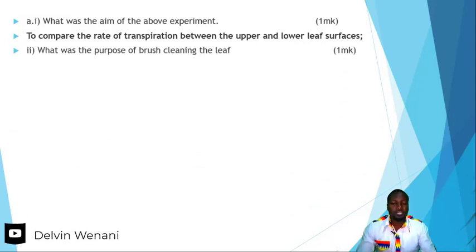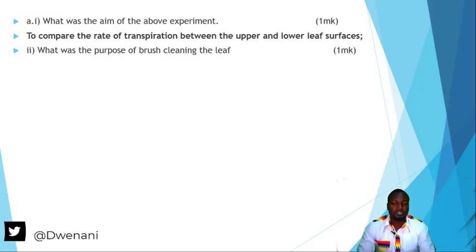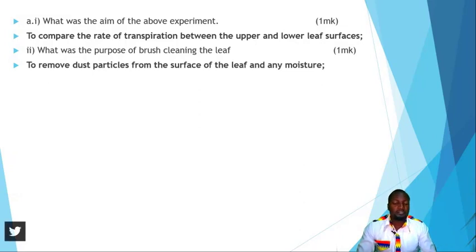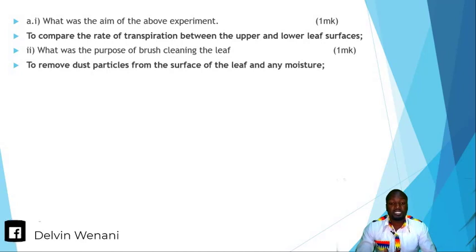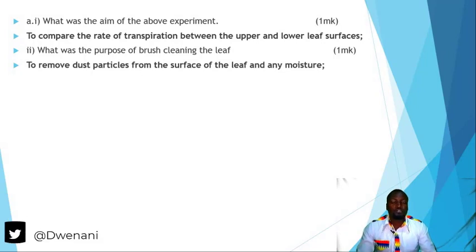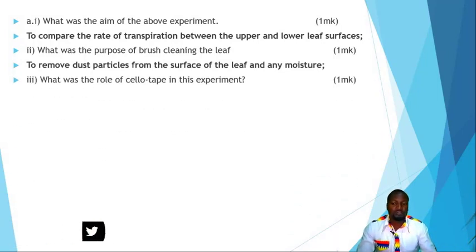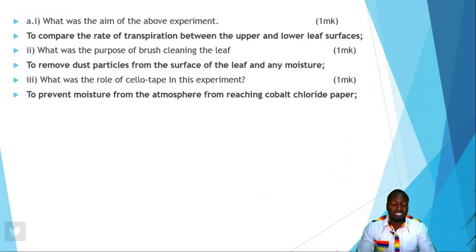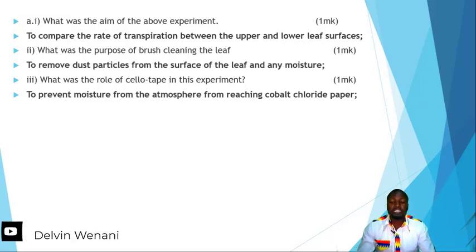What was the purpose of brushing or brush-cleaning the leaf? The reason is to remove dust particles from the surface of the leaf and any moisture, because here we want to test the moisture content after a certain period. So to make it fair for both sides, we must first remove all particles and moisture so that we can have a clear answer. The cello tape was used to prevent moisture from the atmosphere from reaching the cobalt chloride paper.